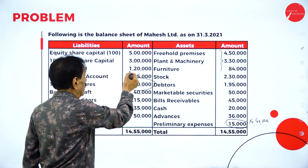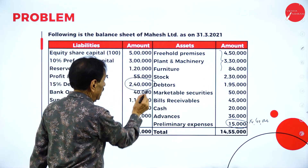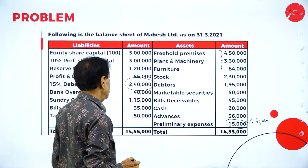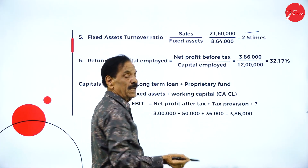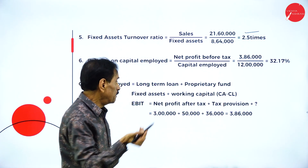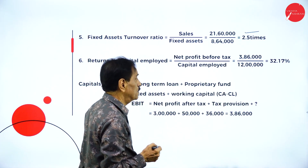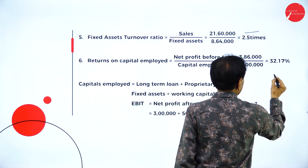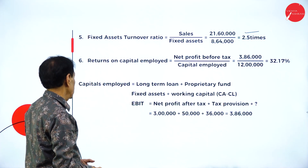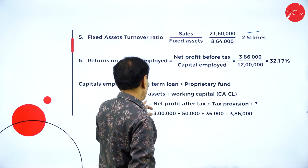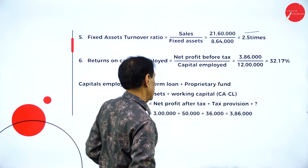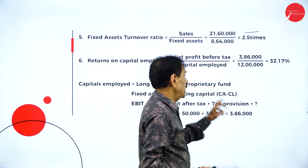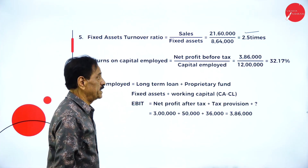Return on capital employed is net profit before tax divided by capital employed. Capital employed is equity share capital plus reserves plus profit and loss account plus debentures, totalling 12 lakh. Net profit before tax is 3 lakh 86,000 — which includes net profit after tax of 3 lakh 50,000 plus tax provision of 36,000. This gives a return on capital employed of 32.17 percent.